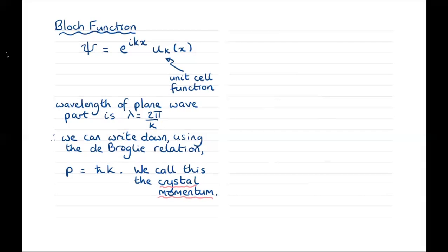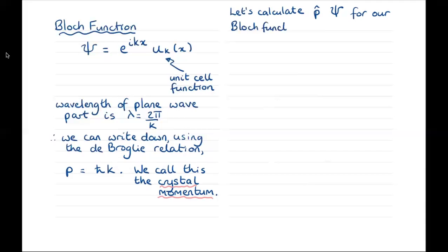The crystal momentum is a particularly useful quantity because it is conserved — for example, during optical absorption, which takes place without the electrons changing their k value. But what we'd like to know is whether this is a true momentum for an electron in a Bloch function. So let's take a look and see if the Bloch function is an eigenstate by calculating the effect of operating on the wave function with the momentum operator in the x direction.